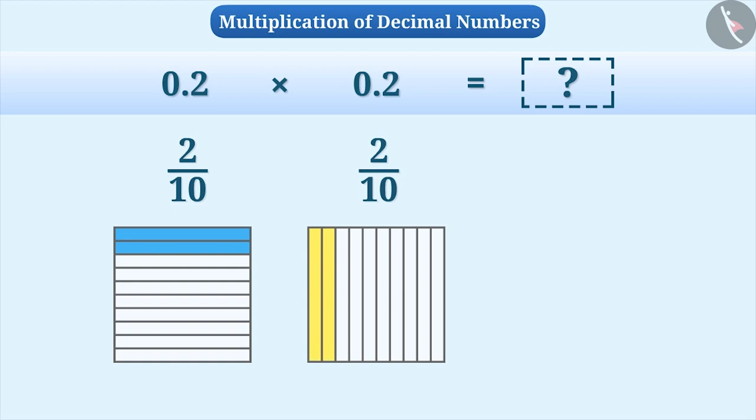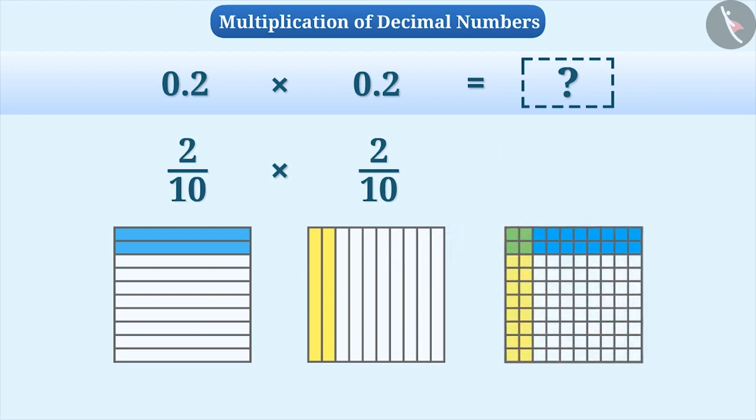Therefore, 0.2 multiplied by 0.2 can be represented as 2 by 10 multiplied by 2 by 10. To find the value of 2 by 10 multiplied by 2 by 10, we will place the squares one above the other.